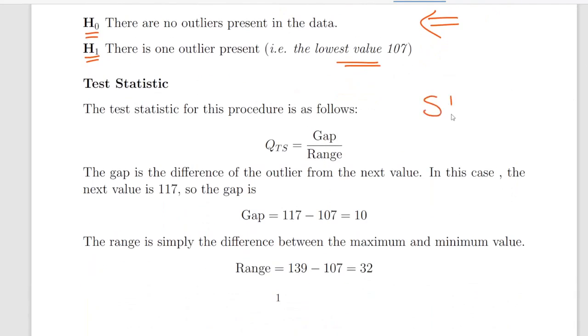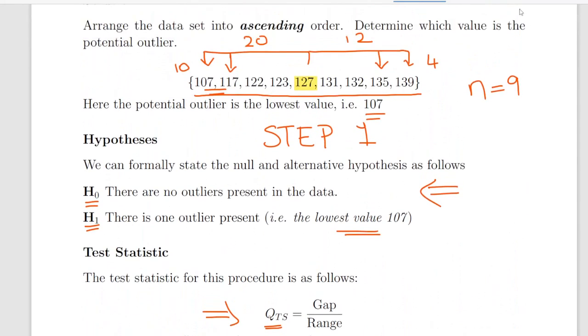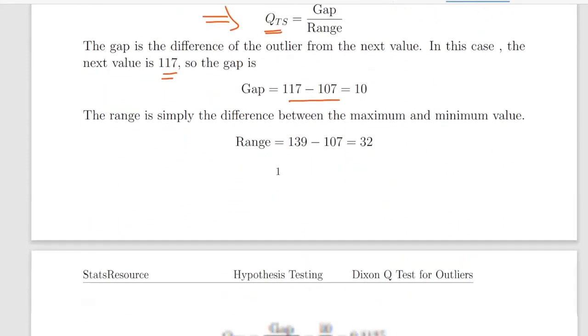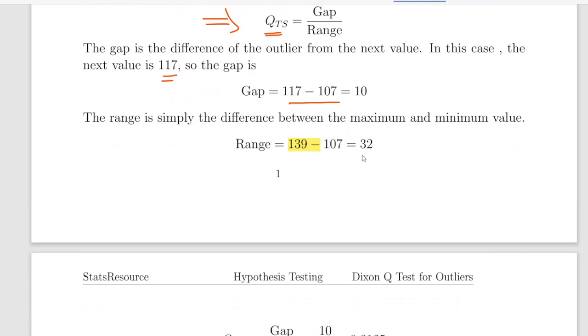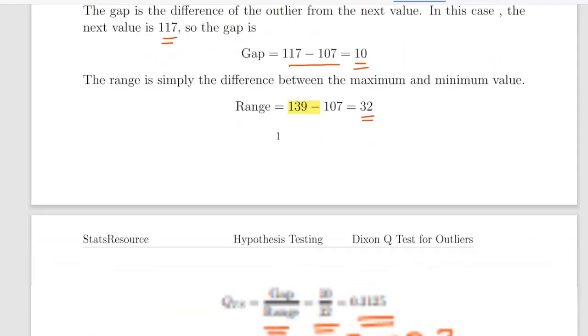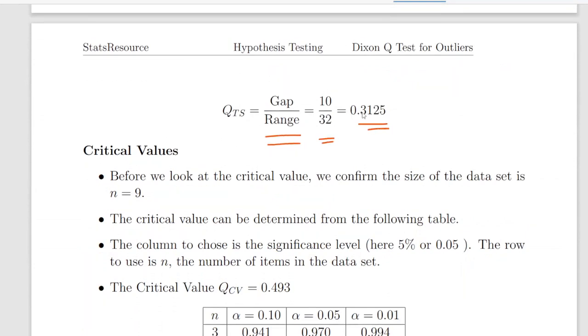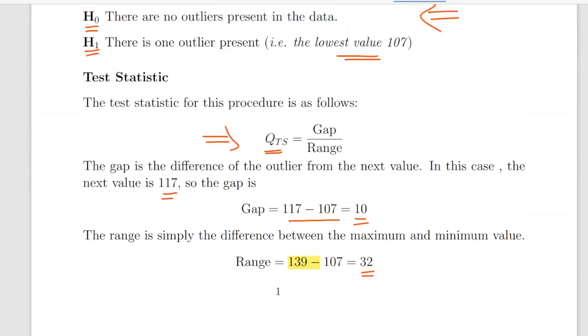The second step would be to calculate the test statistic. The test statistic is essentially a metric of how much evidence we have to support the alternative hypothesis. For the Dixon Q test, the test statistic QTS is the gap divided by the range. The gap is the difference between the outlier and the next value. In this case, the next value is 117, so our gap is 10. The range is the difference between the maximum value and the minimum value, which is 139 minus 107, that is 32. So our test statistic is 10 divided by 32, which gives us 0.3125.